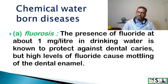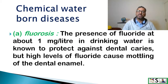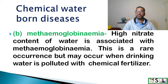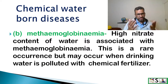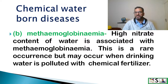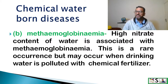Under chemical waterborne diseases, we can include fluorosis. The presence of fluoride at about 1 mg per litre in drinking water is known to protect against dental caries. But high levels of fluoride cause mottling of the dental enamel, and this is known as fluorosis. The second problem caused by chemicals in the water is methemoglobinemia. High nitrate content of water is associated with methemoglobinemia. This is a rare disorder but may occur when drinking water is polluted with chemical fertilizers.